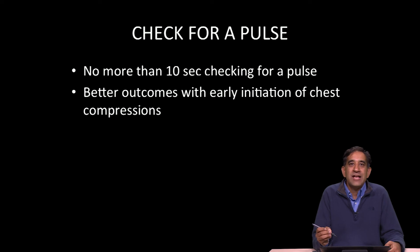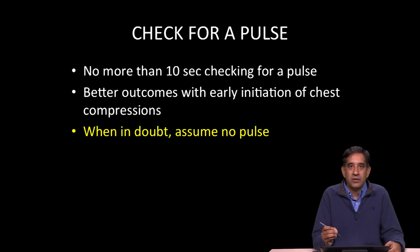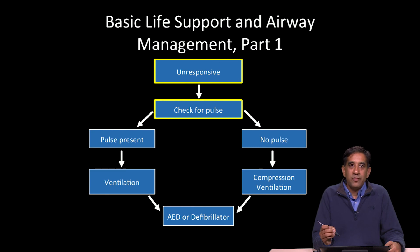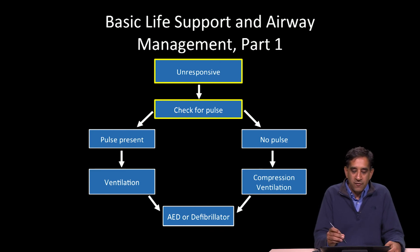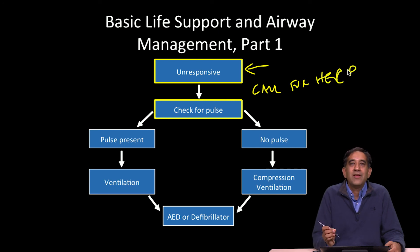We know that patients have better outcomes when we initiate chest compressions faster or earlier. The way we determine whether someone needs chest compressions is whether they have a pulse. So when in doubt, assume that the patient has no pulse. Again, when we think of the basic life support and airway management algorithm, the first step is to determine whether the patient is responsive or not. Then you're going to call for help. And after you've called for help, the next step is going to be to check for a pulse.